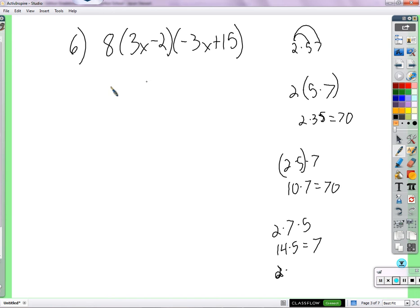That's what you do here. Multiply these together, get the result, multiply it by that. So, let's distribute the 8 into 3x minus 2. What's that going to look like? 24x minus 16.